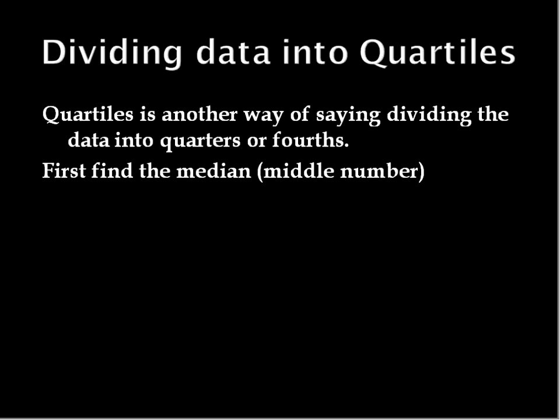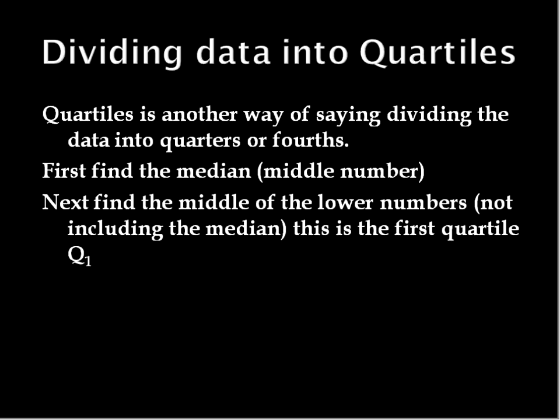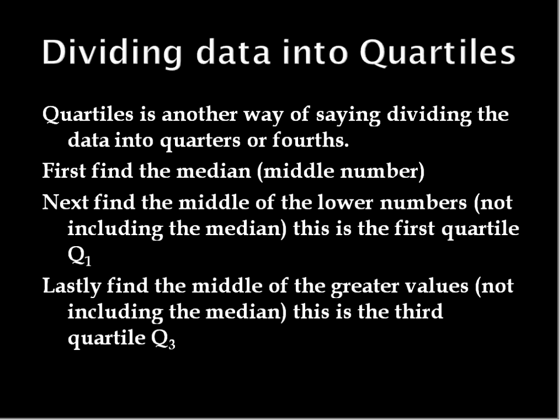So first, you're going to find the median or the very middle number. To do this, again, if you had just a list of numbers, you would have to put them in order. With the stem and leaf plot, we have the list of numbers put in order for us. So we just have to find the number that sits right in the middle. The first quartile, or Q1, as we're going to refer to it, is the middle of the lower half of numbers, not including the median. And the third quartile is the middle of the larger half, or the greater values, again, not including the median. I'll show you how to find those here.